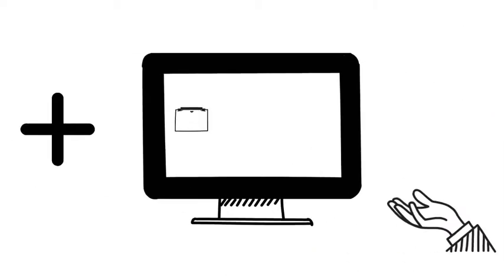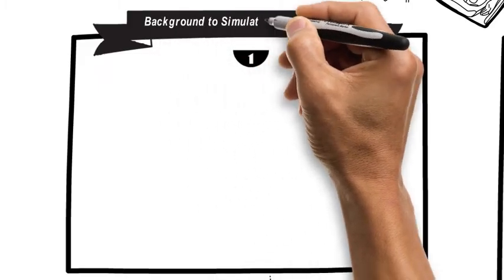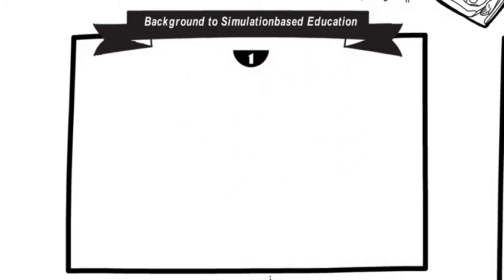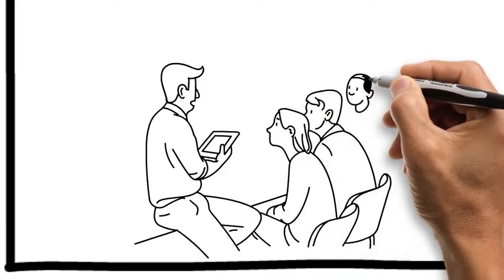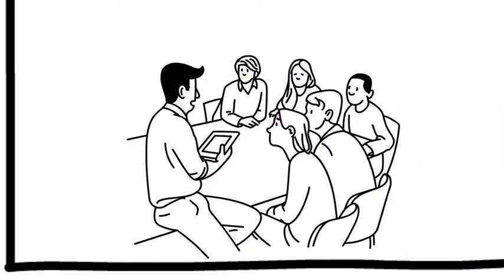The program comprises four modules. The first module, Background to Simulation-Based Education, is an e-learning module, while the three other modules are blended learning with some e-learning but mostly face-to-face.